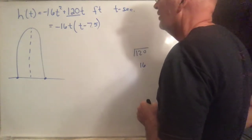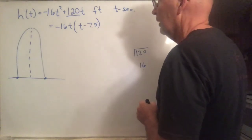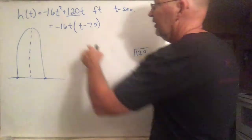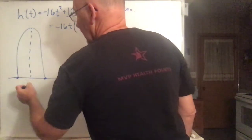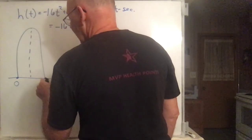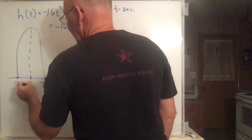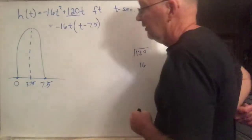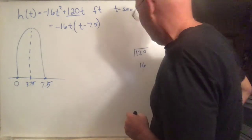So if you factor that out, you're going to get negative 16t times t minus 7.5 right there. And so that's another form for the parabola. We see that the two places where that is equal to 0 is either at time equal to 0 or at time equal to 7.5. And halfway in between there would be 3.75.